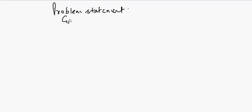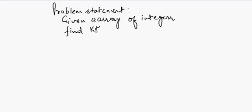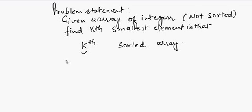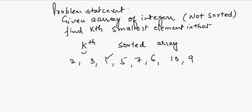Today we will be discussing a problem on the application of QuickSort: finding the kth smallest element. The problem statement is: given an array of integers, find the kth smallest element. That means we have to find the kth element in the sorted array. If the array were sorted, we just return that element, but the given array is not sorted. For example, given the array [2, 3, 1, 5, 7, 6, 10, 9] and k=4, the first smallest is 1, second is 2, third is 3, and the fourth is 5.